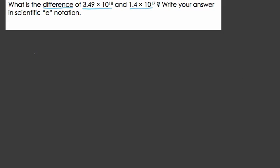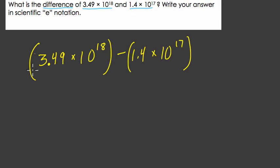So really here, we can rewrite this quickly as an expression of 3.49 times 10 to the 18th minus 1.4 times 10 to the 17th. Now you don't need parentheses here because the order of operation tells you multiply first, right? But it helps us see the numbers we're dealing with.